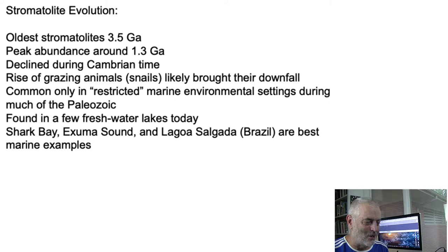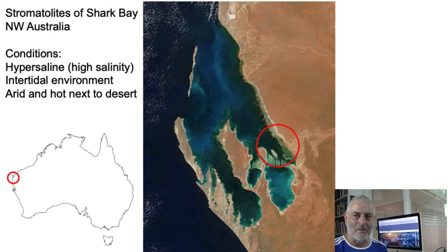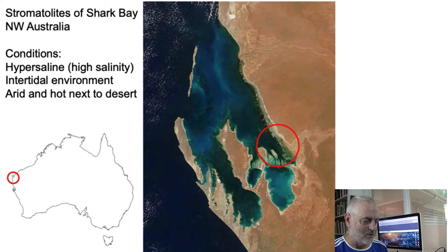Here are the stromatolites of Shark Bay — that's where they're located in Western Australia. Sharks swim in and out of Shark Bay, but this is the upper part where it's really hot and hypersaline, episodically inundated with water. That allows the algae to not dry out in the desert while remaining wetted during high tides. These areas are exposed to tidal activity as well. You can see where Shark Bay is on the map of Australia over on the left-hand side.